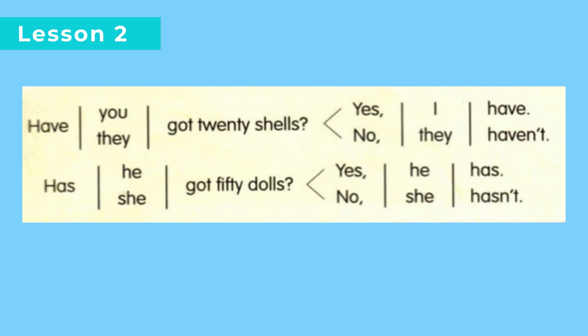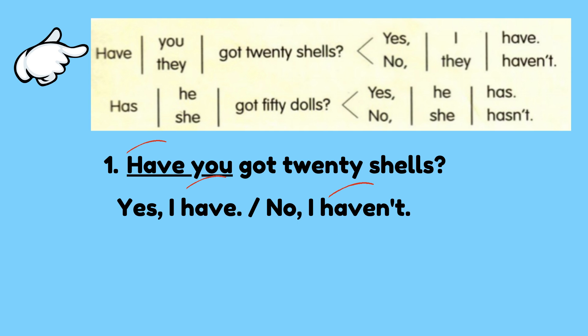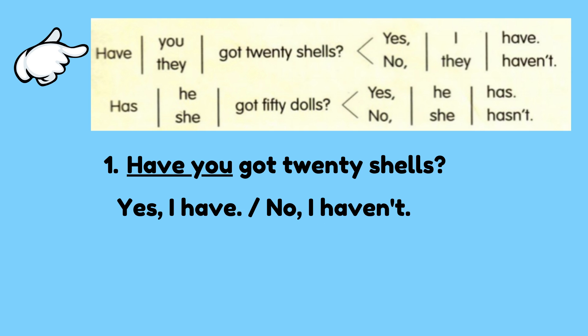For lesson 2, it will be based on this table. Let's take a look at have first. For you and they, we must use have. For example, number 1: have you got 20 shells? — adakah anda mempunyai 20 cangkerang? If you have, kalau ada: yes, I have. If you don't have, kalau tiada: no, I haven't. So when we use have in the question, in the answer we also use have. That's why the answers should be yes, I have or no, I haven't.